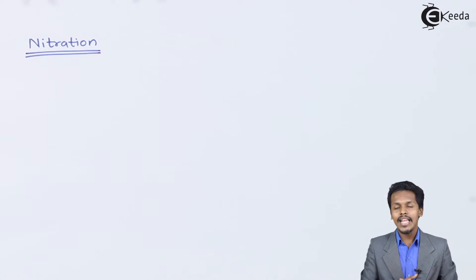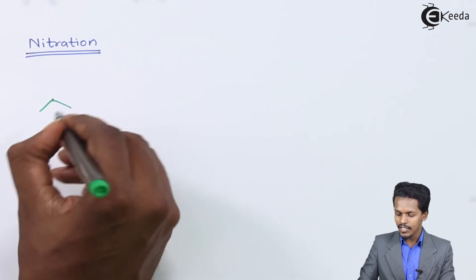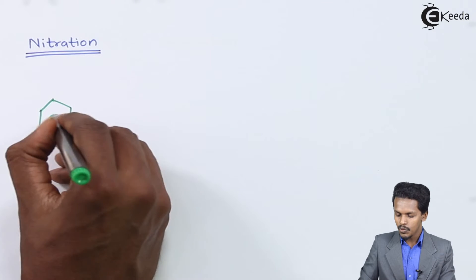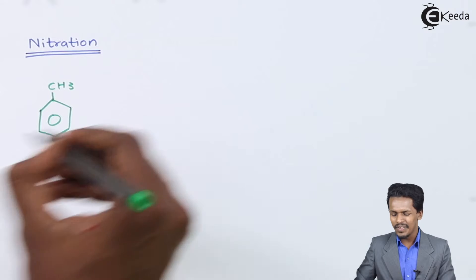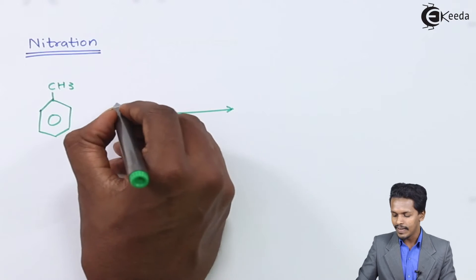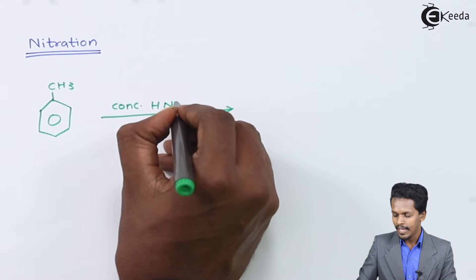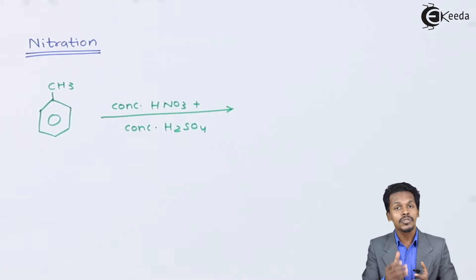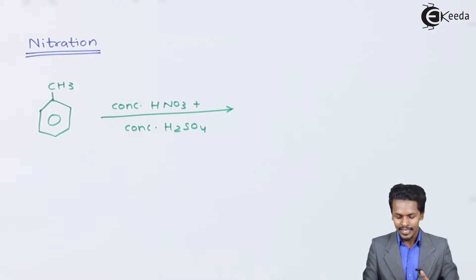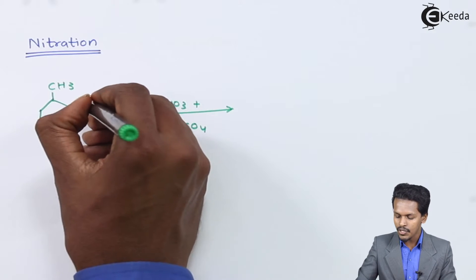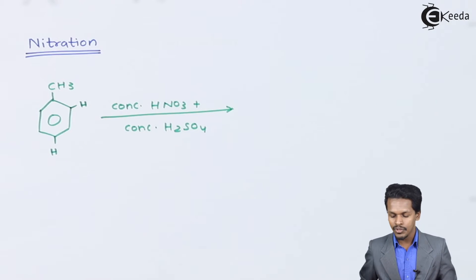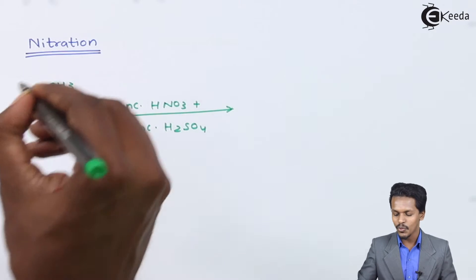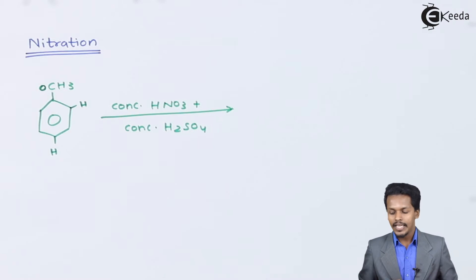The next reaction is nitration. Anisole is treated with concentrated HNO₃ along with concentrated H₂SO₄. H₂SO₄ is used because it is a very good dehydrating agent, and in this reaction the H₂O molecule is removed. The benzene ring similarly has ortho and para hydrogen positions available.